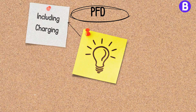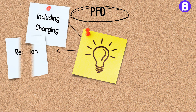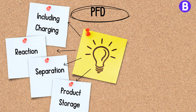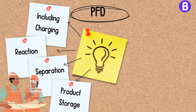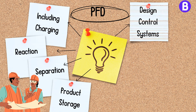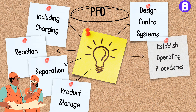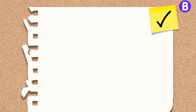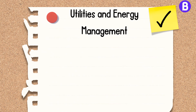The PFD would outline the different stages of the batch process, including charging, reaction, separation, and product storage. This information helps engineers design appropriate control systems, establish operating procedures, and optimize cycle times for efficient batch production. Utilities play a critical role in energy management and overall process efficiency, so a process engineer should clearly understand the utilities used.